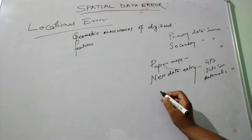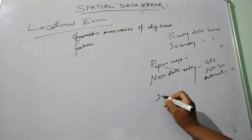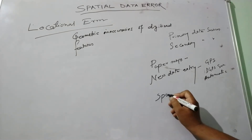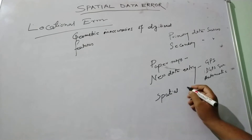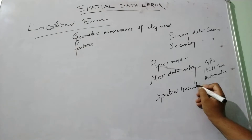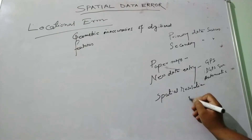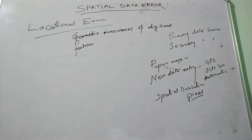Another important source of location error is the spatial resolution of satellite data — that is, the pixel size. This also causes location error, and is considered a location error from the primary sources.